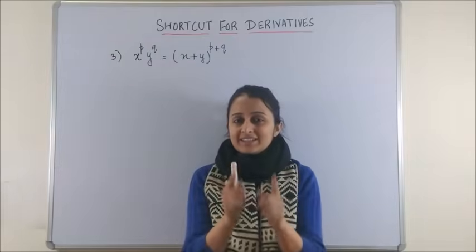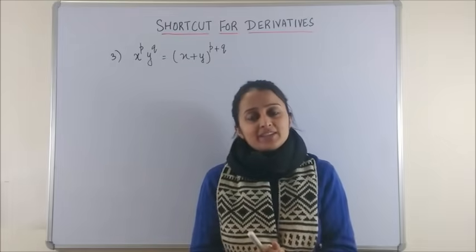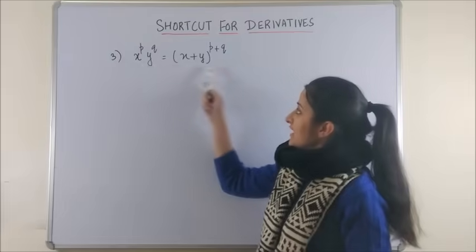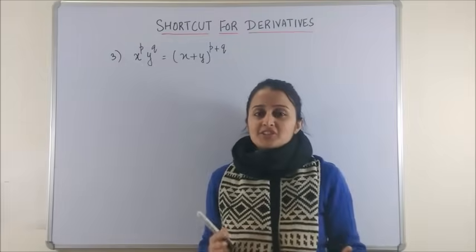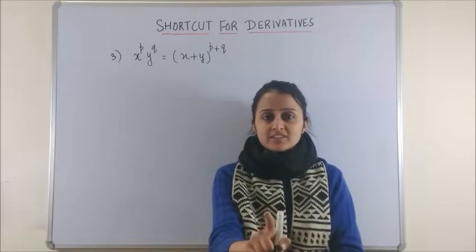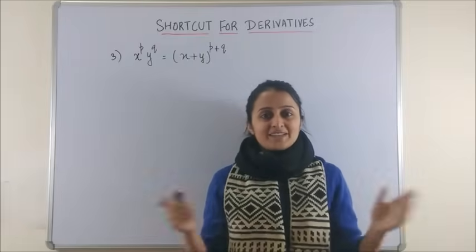However, there is a little catch, you can apply this form to simplified implicit function. That means, if I have something like this, you cannot just directly start with the form. However, after doing the first conventional step, we can apply the formula.